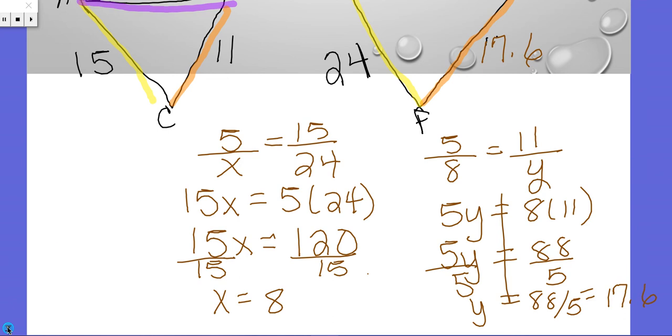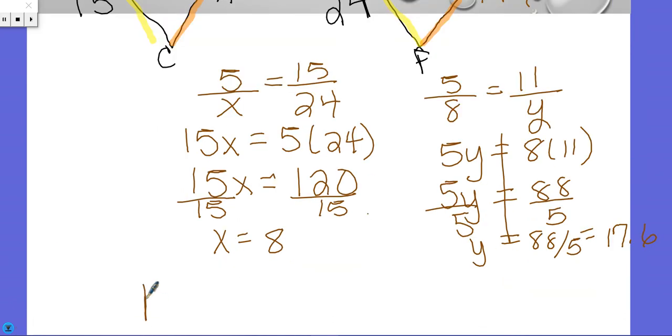Now that we have everything we need, I'm going to go ahead and find the perimeter. So perimeter equals 24 plus 17.6 plus 8.